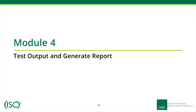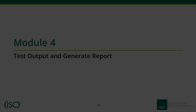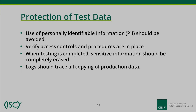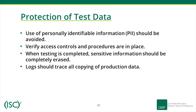Module 4: Test Output and Generate Report. Module Objectives: Recognize relevant procedures to protect sensitive information when utilizing test data. Protection of test data: Use of personally identifiable information (PII) should be avoided. Verify access controls and procedures are in place. When testing is completed, sensitive information should be completely erased. Logs should trace all copying of production data.